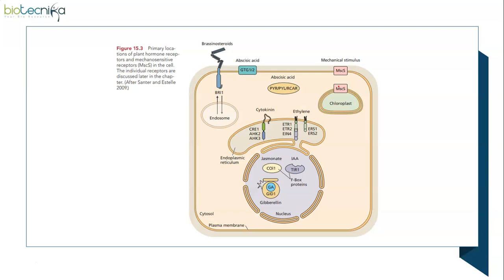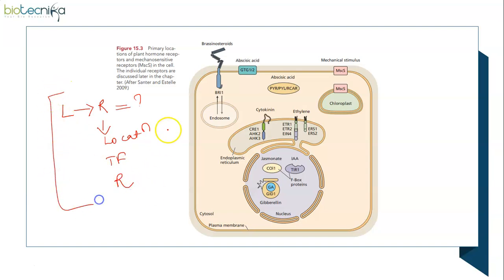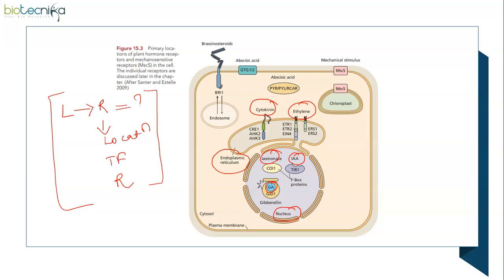When it comes to signaling pathways, what is the ligand, the corresponding receptor, and their location is very important, along with the transcription factor and repressor — these are the content you must remember for each hormone. For auxin, jasmonate, or gibberellic acid, the receptor is present in the nucleus. For cytokinin and ethylene, it is present in the endoplasmic reticulum. Abscisic acid has receptors in the membrane as well as in the cytoplasm. Brassinosteroids have their receptors present in the membrane.